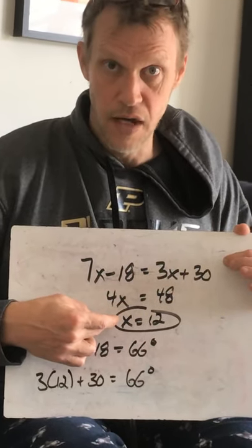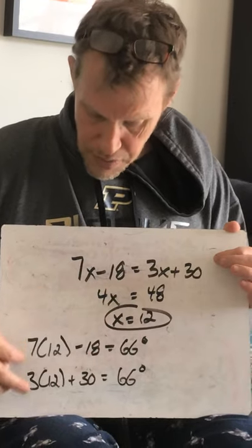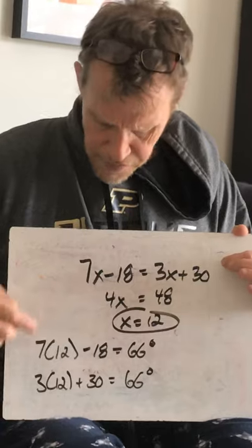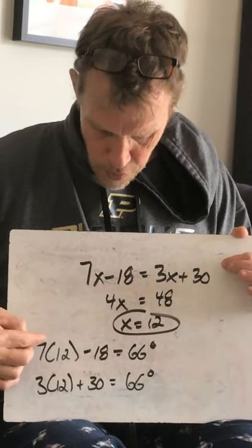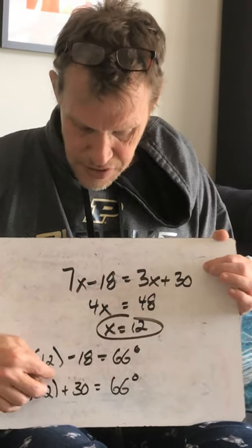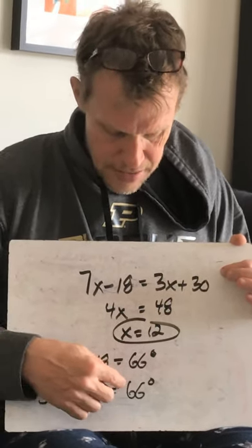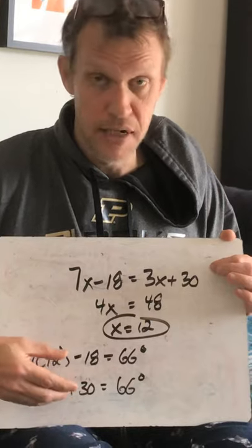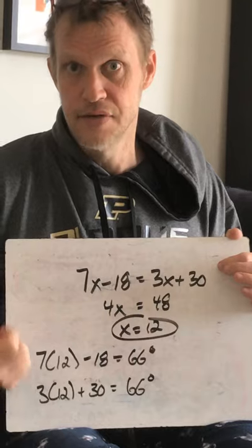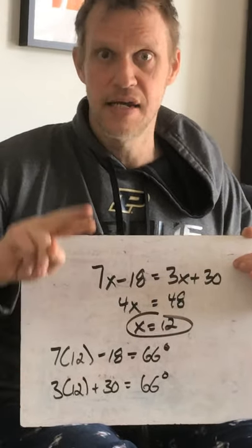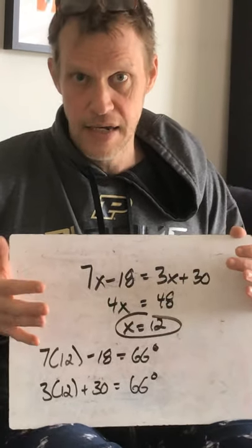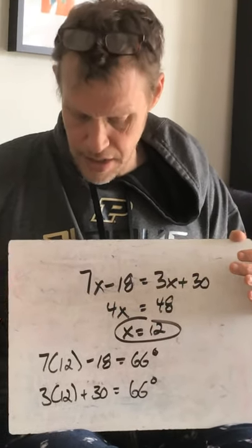Solve it — x equals 12. Now plug it into both expressions to verify. If x equals 12: 7 times 12 is 84, minus 18 is 66 degrees. And 3 times 12 is 36, plus 30 is 66 degrees. They better be equal because they're vertical angles. So that's what you're going to see on Tuesday. There are two Khan assignments — one on complementary and supplementary, the other on vertical angles. Make sure you set them equal to the right amount.